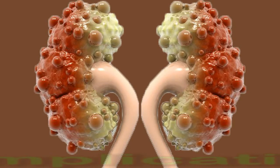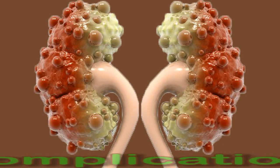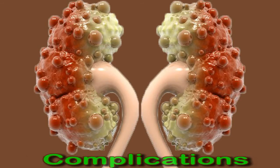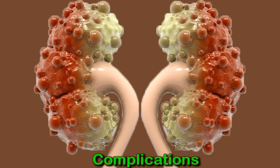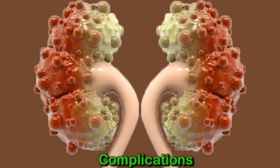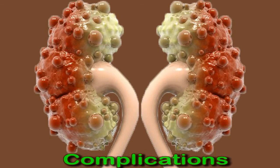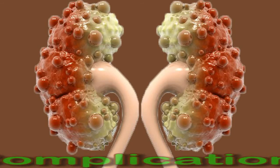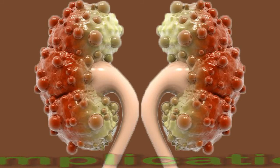Complications. Most simple kidney cysts do not cause complications or problems, although this can occur in rare cases. Complications of simple kidney cysts include ruptured cysts, infected cysts, and swollen kidneys caused by urine obstruction. When complications occur, symptoms may intensify and a person should seek medical attention immediately. Most complications, including ruptured cysts, can be managed conservatively; however, they can be life-threatening if not treated promptly.